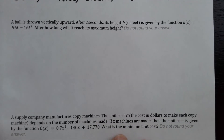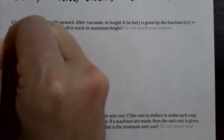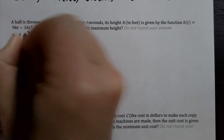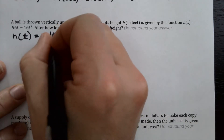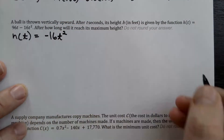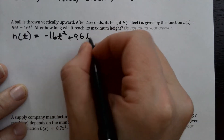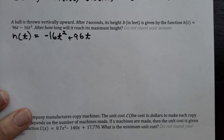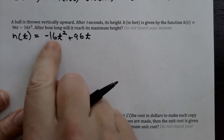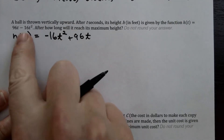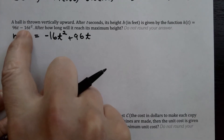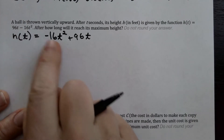Now for the next problem: a ball is thrown vertically upward and after T seconds its height H in feet is given by h of T equals 96T minus 16T squared. I'm going to rewrite it with the squared term first: negative 16T squared plus 96T, so there's no confusion about what A and B are.